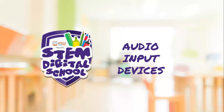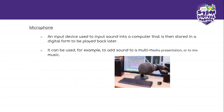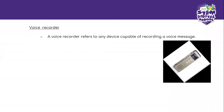Now we have audio input devices. This is where we find a microphone. A microphone is an input device used to input sound into a computer, which is then stored in a digital form to be played back later. It can be used, for example, to add sound to a multimedia presentation or to mix music. A video recorder refers to any device capable of recording a voice message.